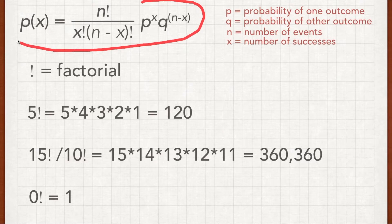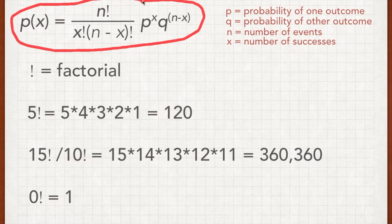So this may look intimidating, but it shouldn't be, because the variables are the same. P is the probability of one outcome, Q is the likelihood of the other, n is the number of events, so the number of times I flip the coin. And we're going to use x, the number of successes. So this is like the number of heads.